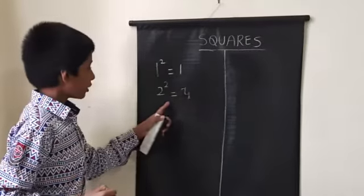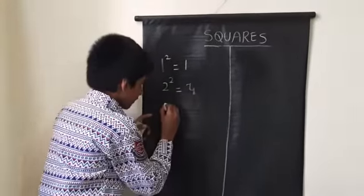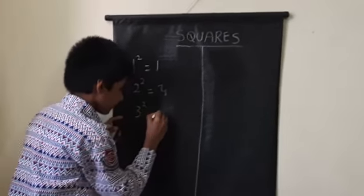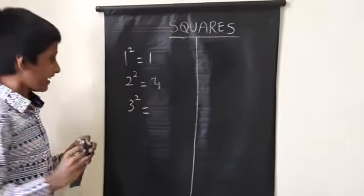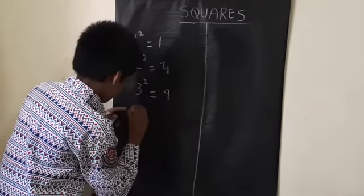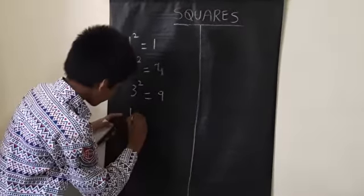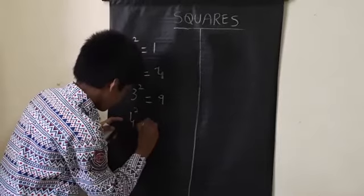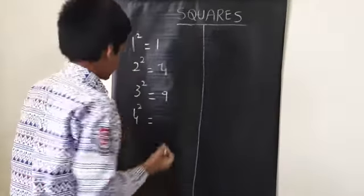Two squared: two into two is four. Three square: three into three is nine. Four square: four into four is sixteen.